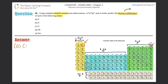To find electron configurations in the non-abbreviated version, all you have to do is follow the atomic number. Remember, the atomic number is always the whole number, not the decimal. Hydrogen is 1, lithium is 3, sodium is 11, and so on.